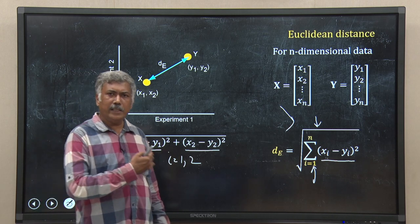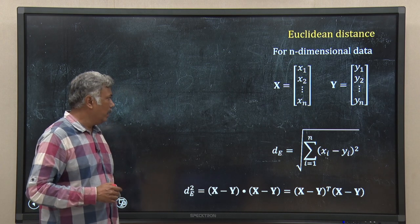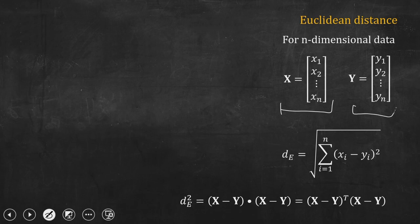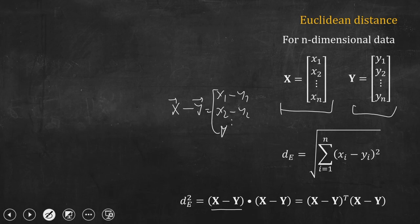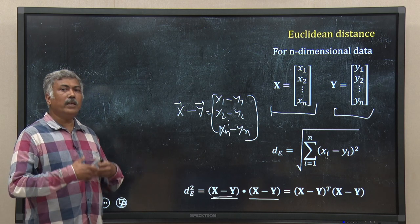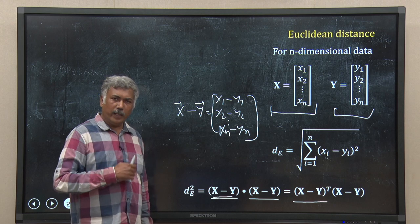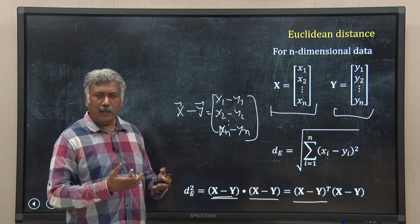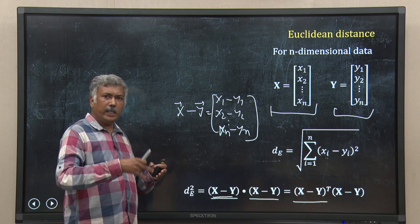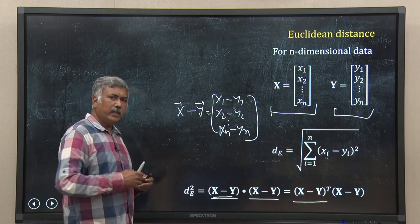We can use linear algebra to easily calculate Euclidean distance. We represent the data as column vectors, and the dot product of (X minus Y) with itself gives the square of the Euclidean distance. We can express this as the transpose of (X minus Y) multiplied by (X minus Y). This is easy to implement in R or any other programming language, and is much faster than iterating through a loop, summing, and then taking the square root.